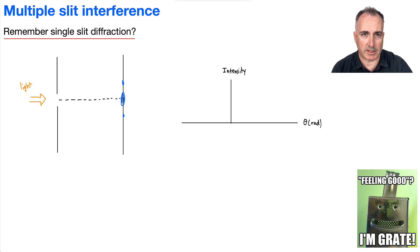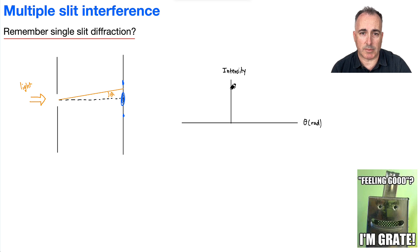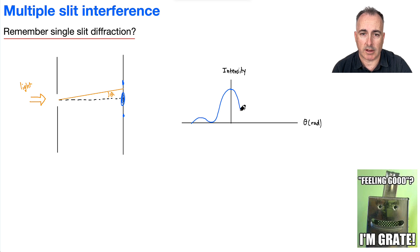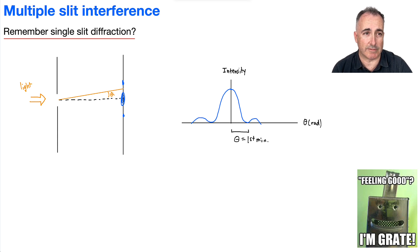If I'm projecting these angles, let's say I have an angle theta that goes to the first minimum. This ends up making this kind of pattern. If I'm looking at the intensity of light with respect to theta in radians, it goes something like this. Remember, the angle tells us the first minimum. This is what we've been learning about for single slit diffraction.